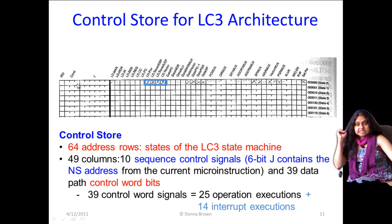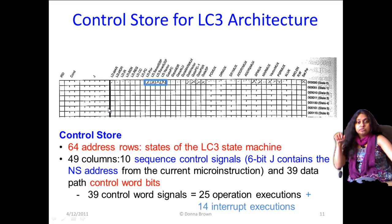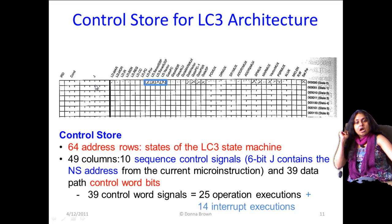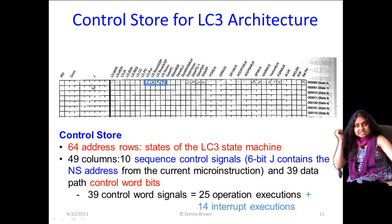The 10 control signals consist of 6 J bits, 3 COND bits, and 1 IRD bit. We will go through how you come up with these 6 J bits — what logic determines them.